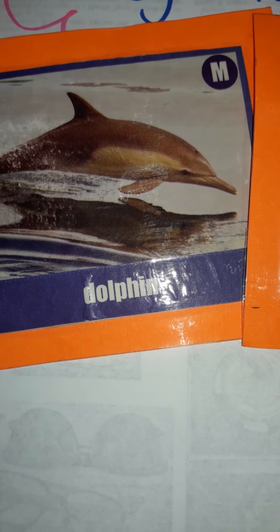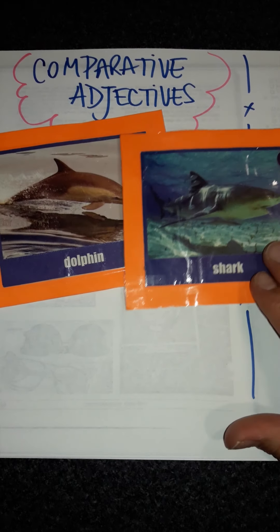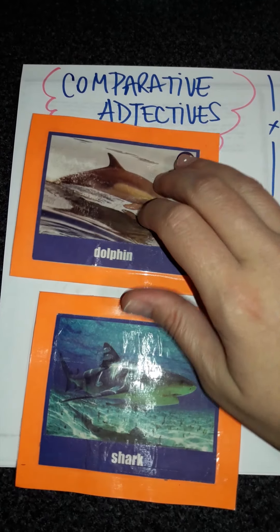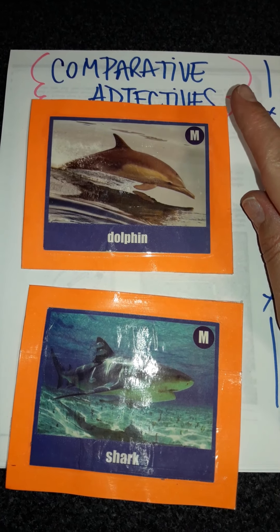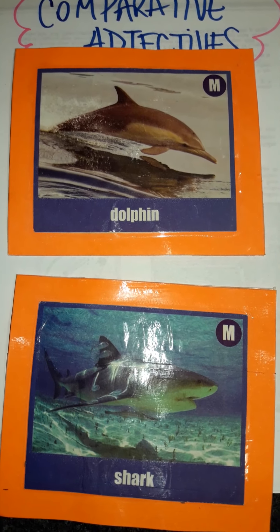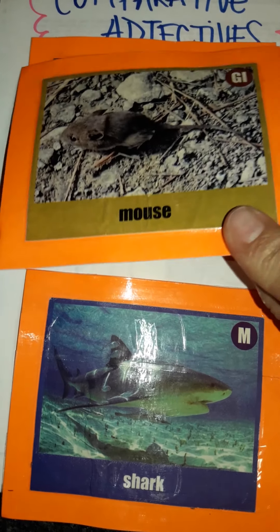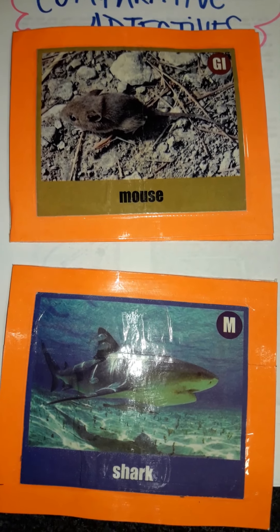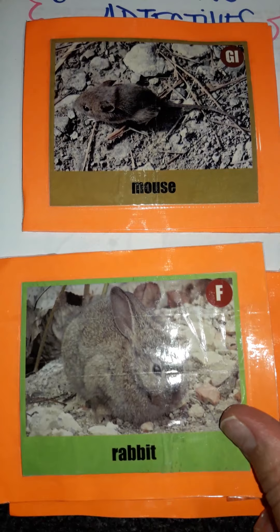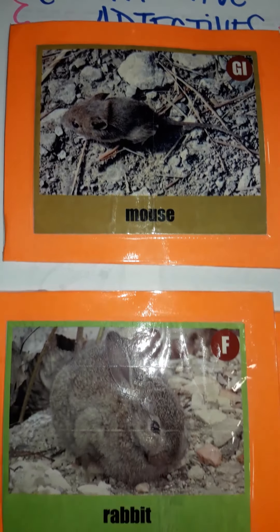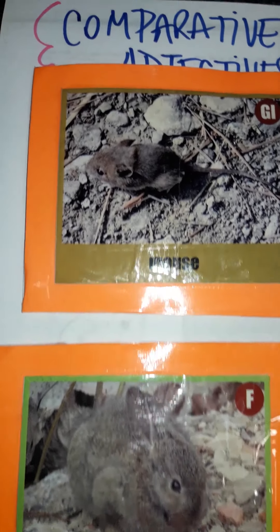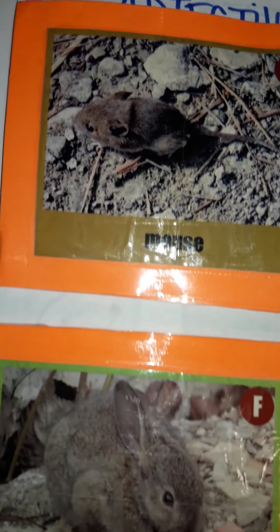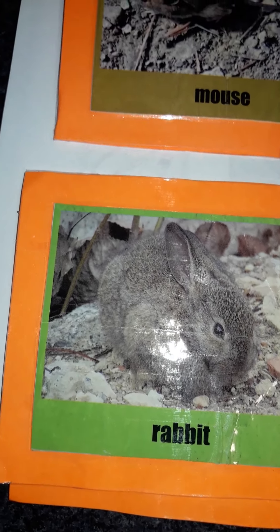If we compare these two animals, we can say that the dolphin is more intelligent than the shark. Now, let's talk about a mouse and a rabbit, and we use the adjective 'small'. We can say that the mouse is smaller than the rabbit.